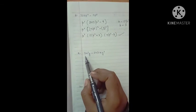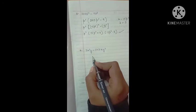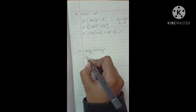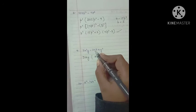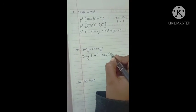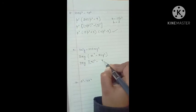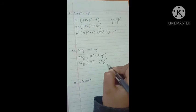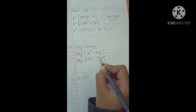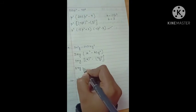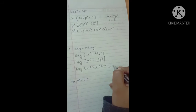For the next question, we first take out common factors 3, x, and y. This gives 3xy(x² - 81y²). Now, 81y² equals (9y)², so a is x and b is 9y. Applying the identity, we get 3xy(x + 9y)(x - 9y).